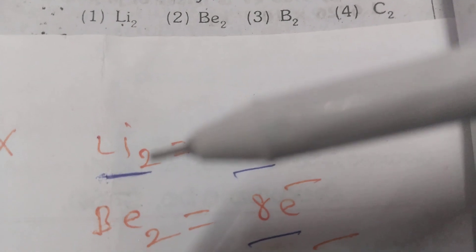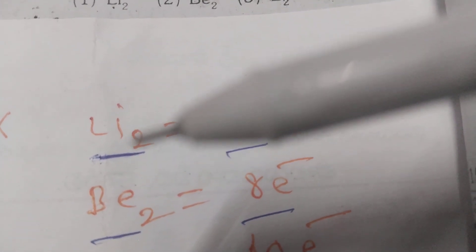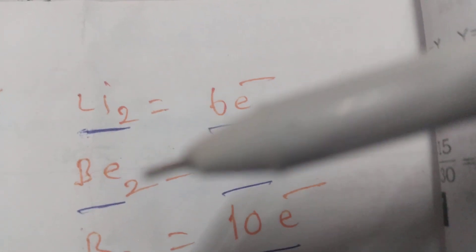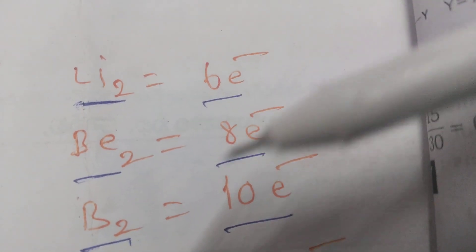Li-2 means 6 electrons are present in Lithium Li-2. Beryllium atomic number 4, 4 times 2, 8 electrons are there.